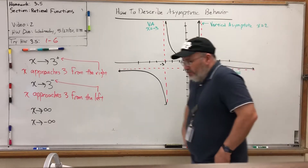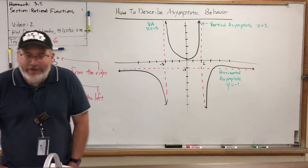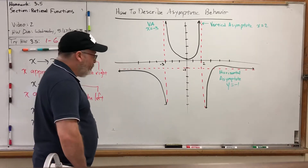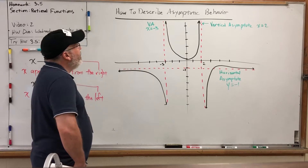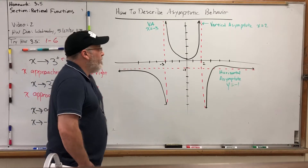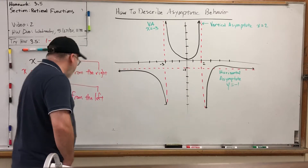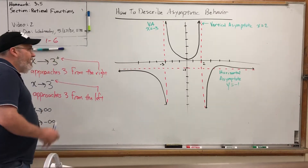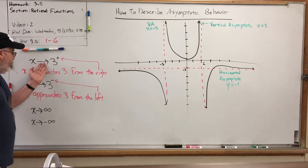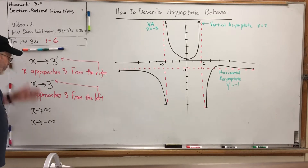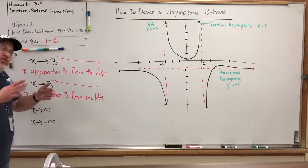The role of the asymptotes is basically to dictate what happens as the graph gets closer to them. But how can we actually represent that symbolically? In other words, how can we describe asymptotic behavior? It's the correct phrase for an easy idea. In order to do that, I need to remind you about the arrow I introduced in the previous video for the word 'approaches,' because we're going to see a lot of statements about things approaching things.